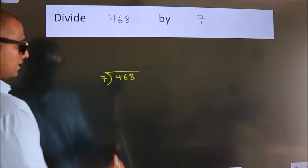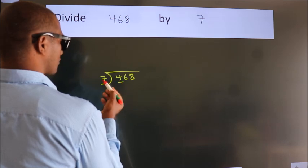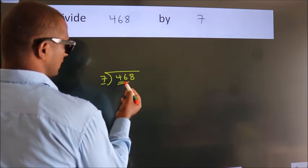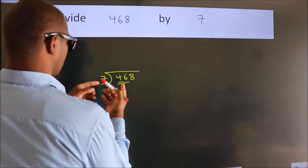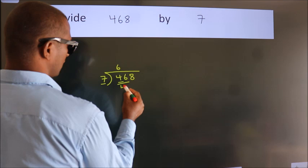Next. Here we have 4. Here 7. 4 is smaller than 7. So we should take two numbers, 46. A number close to 46 in the 7 table is 7 times 6, 42.